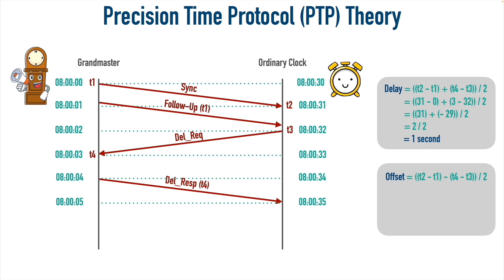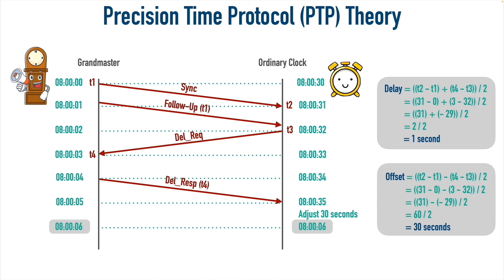Now let's calculate the offset — the amount by which the ordinary clock needs to adjust itself. The offset formula uses the same T2−T1 and T4−T3 quantities, but subtracts them instead of adding: ((T2 − T1) − (T4 − T3)) / 2 = (31 − (−29)) / 2 = 60 / 2 = 30 seconds. The ordinary clock does this calculation and realizes it needs to turn itself back 30 seconds because it was running 30 seconds too fast. Once it makes that adjustment, the clocks are in sync, both agreeing the current time is 8 o'clock and 6 seconds.